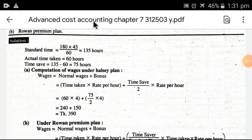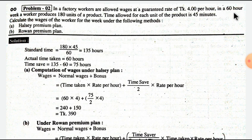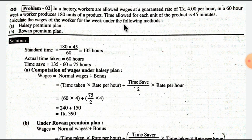Okay guys, it is advanced cost accounting. In a factory, workers are allowed wages at a guaranteed rate per hour. In a 60-hour week, a worker produces 180 units of product. Time allowed for each unit of product is 15 minutes. Calculate the wage of the worker for the week under the following methods.